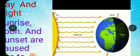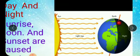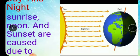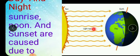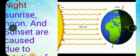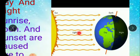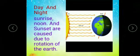This day and night happens because of the rotation of earth around its own axis. When earth moves around its own axis, the part that comes close to the sunlight will have day and the part away from sunlight will have night. Sunrise, noon, and sunset are also caused due to the rotation of earth.